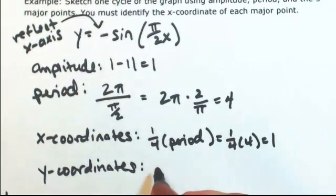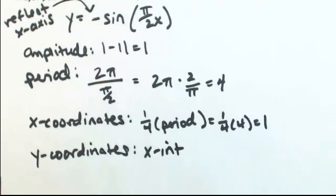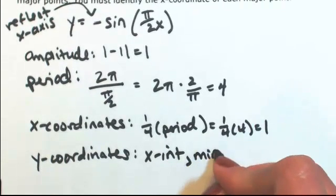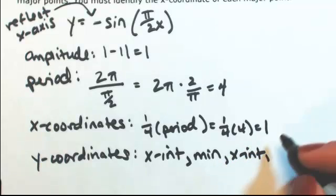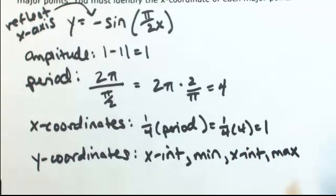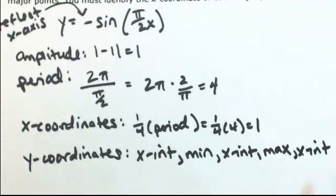For the y-coordinates, we still start with an x-intercept, but instead of going to a max, we reverse and go to a min, back to an x-intercept, then up to a max, and ending back in an x-intercept.